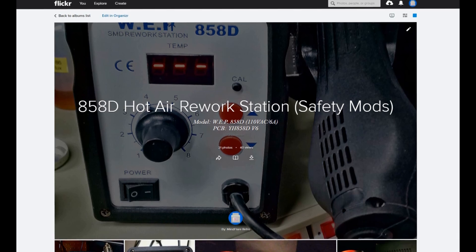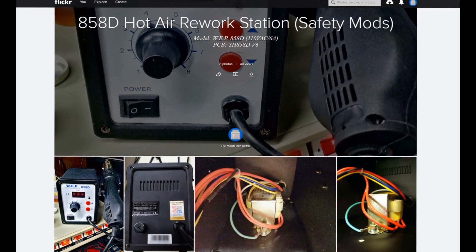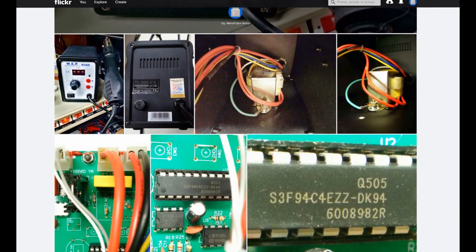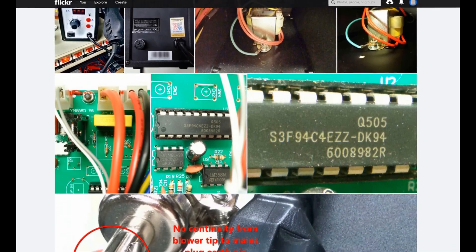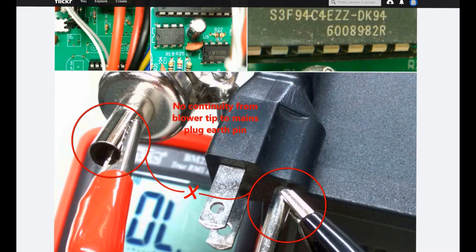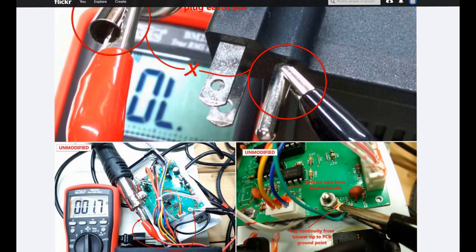Finally, if you're interested in seeing high resolution pictures of the safety mods I made to my 858D hot air rework station, then you can head on over to the Flickr album I created. I'll post a link below. There you'll find before and after pictures of the mod process. And a lot of the pictures have captions and notes as well.